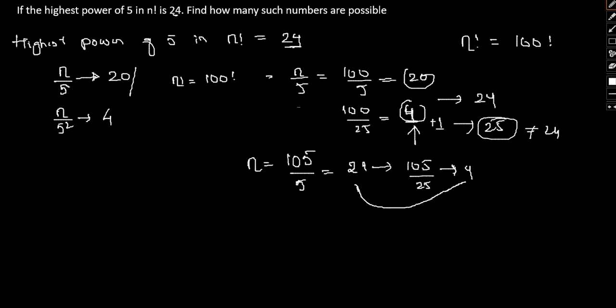Now, see one thing. This 21 plus 4 turns out to be 25. Although we were unable to increase 1 in this spot, we are able to increase 1 over here in 105.